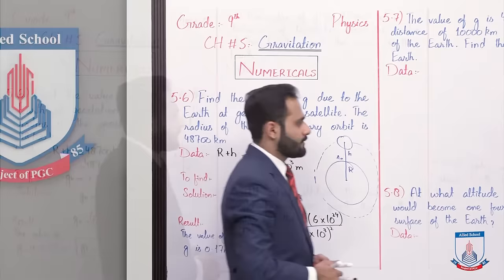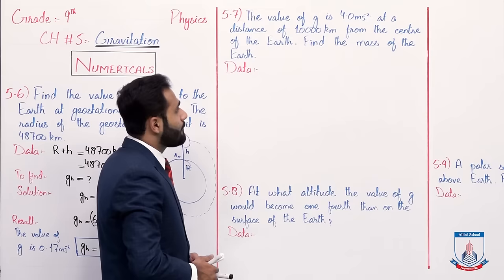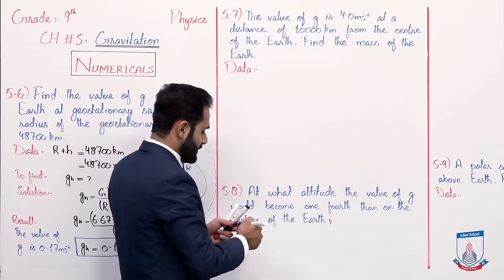Now move to numerical 5.7: the value of g is 4.0 meter per second squared at a distance of 10,000 km from the center of the Earth — find the mass of the Earth. So again we have the value of g given, and the distance from the center of the Earth is 10,000 km.